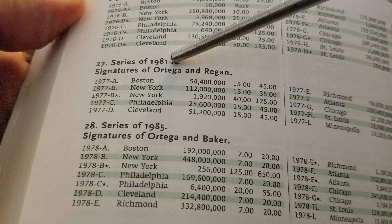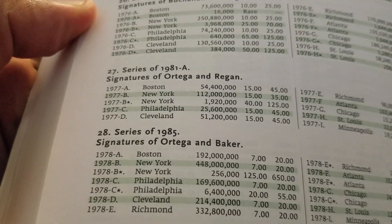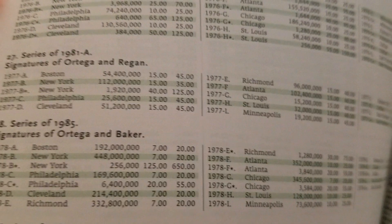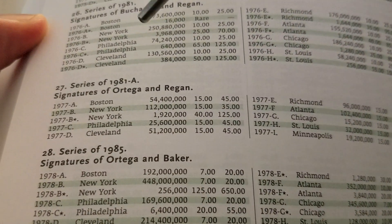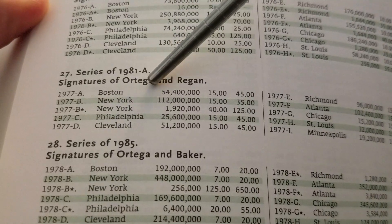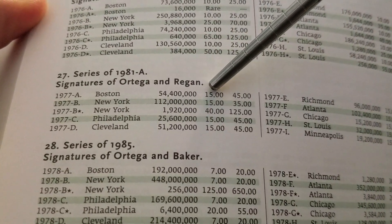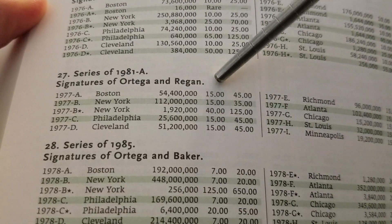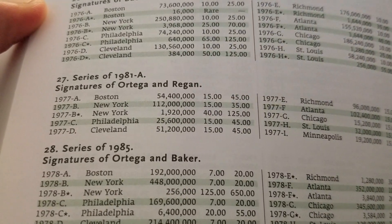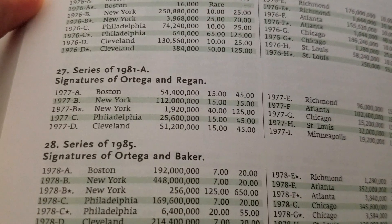Depending on the series, it breaks it down by Federal Reserve district. For example, with this small size Federal Reserve note — a Series 1981A in Boston — fifty-four million, four hundred thousand notes were printed. To get one graded EF-40, it's worth fifteen bucks; one graded Choice 63 is worth forty-five bucks. This is for the five-dollar note.